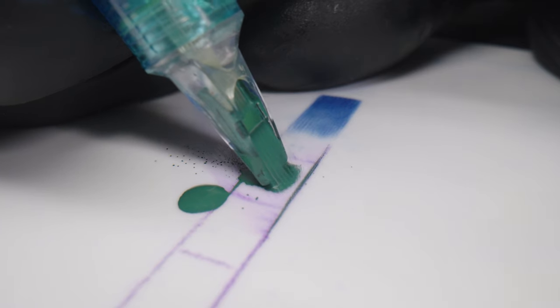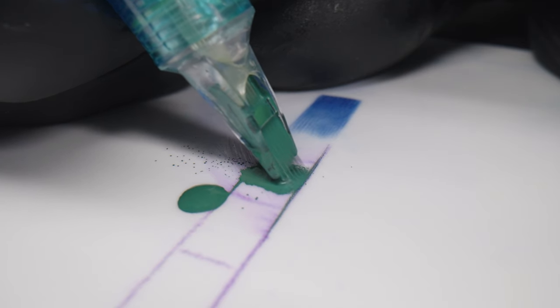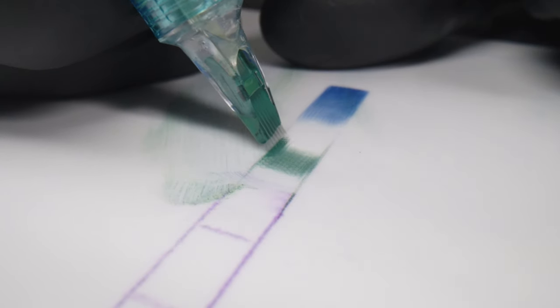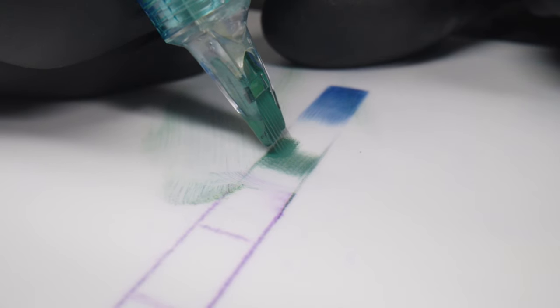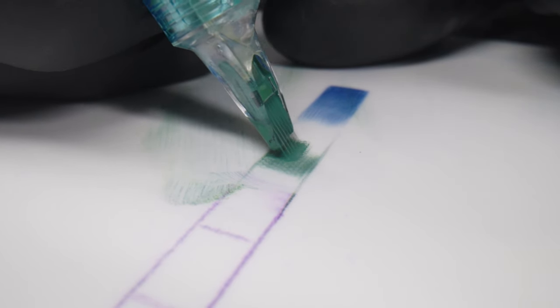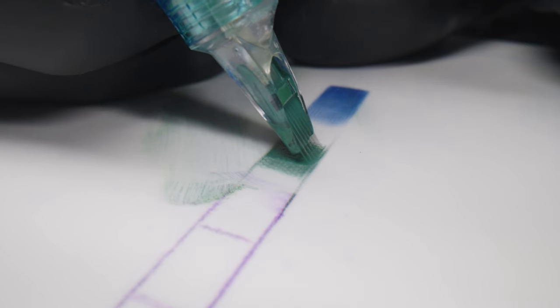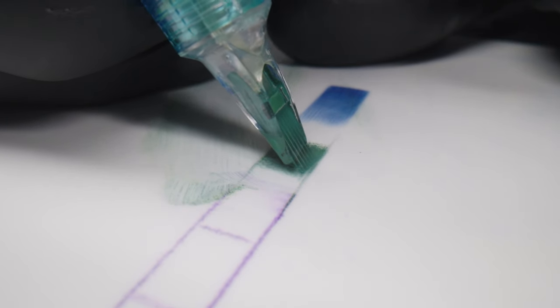The reason being, if you tattoo the light colors first and then the dark ones, there's a risk of smearing the color into the open wound, altering the light color tone. In summary, by tattooing the dark tones first and then the light ones, this risk is eliminated.